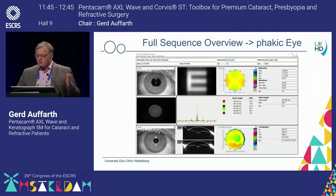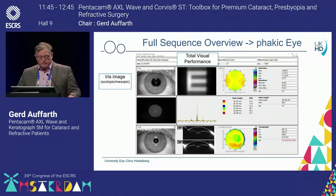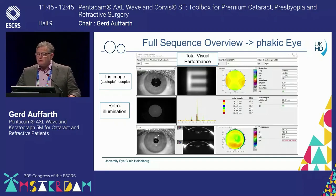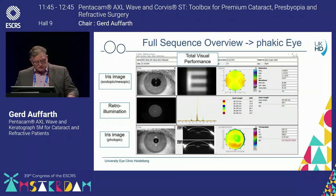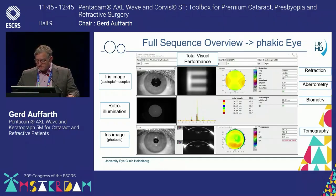If you have a full sequence overview here in a normal phakic eye, you have here the total visual performance, which is the wavefront of the entire optical system. You have the iris image in a scotopic and mesopic version, the retroillumination — which is quite interesting, we will talk about that later — and the photopic iris image. Then we have the refractions, the wavefront, the aberrometry, axial length, biometry — everything is in here — tomography.